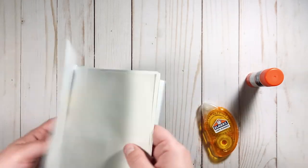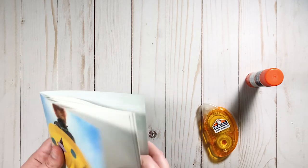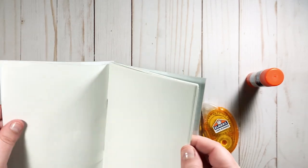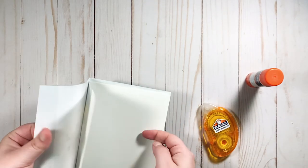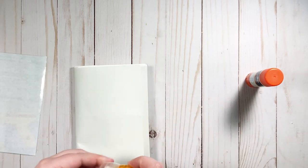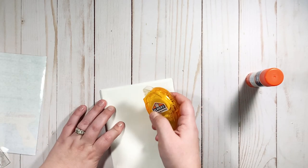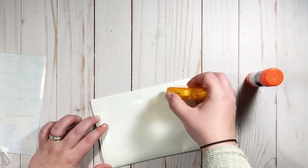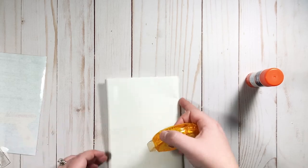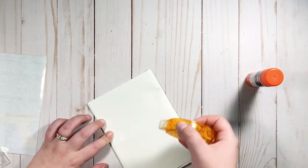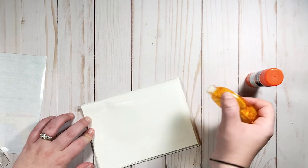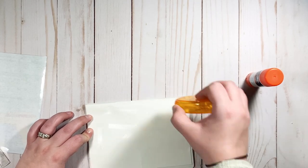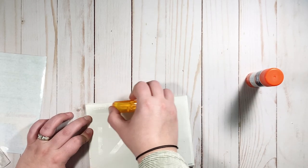There are a few different ways to do this, but I prefer this Elmer's tape runner. I get these at Walmart—they're very inexpensive and you can buy refills. You can also get them on Amazon, Target, etc. What I really like about these is that they're easy to use, long-lasting, and permanent.